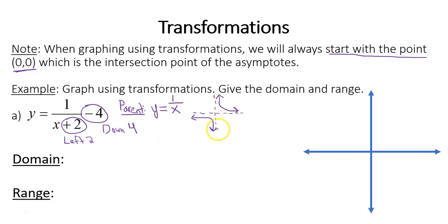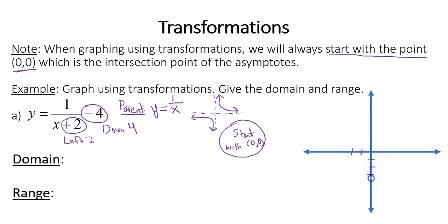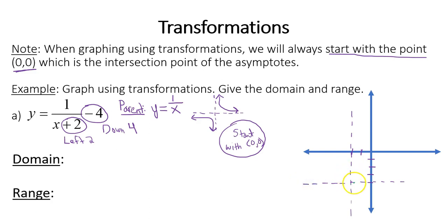Remember, we're going to start with 0, 0 — the intersection point of the asymptotes. From 0, 0, we go left 2 and down 4. That's where our asymptotes intersect. I need to draw a dashed vertical line representing the vertical asymptote and a dashed horizontal line through that point representing the horizontal asymptote. Focus on the four regions: top right, top left, bottom left, bottom right. The top right and bottom left regions are where we draw our curves.